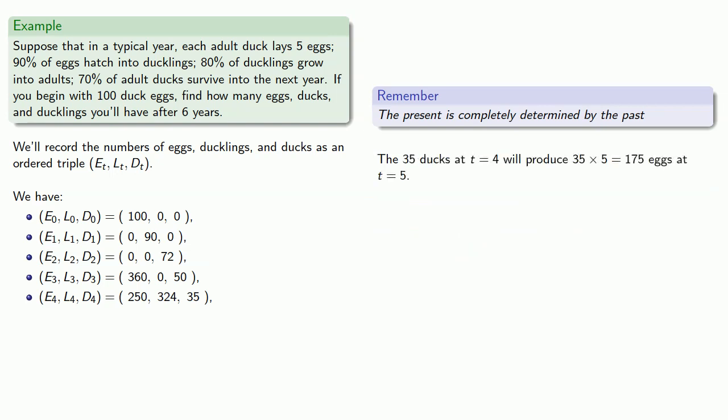At t equals five, the eggs are produced by the 35 ducks at t equals four, that's 175. The 250 eggs we have at t equals four will become 225 ducklings.